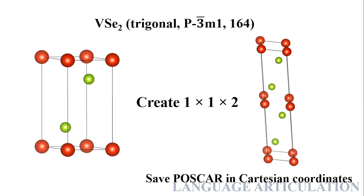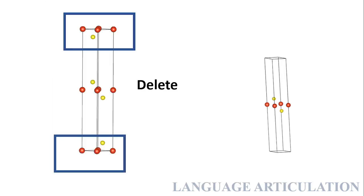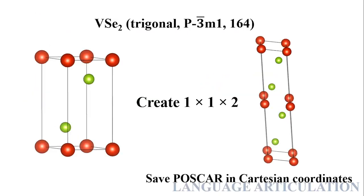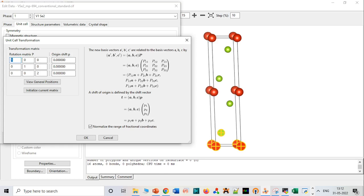It's a trigonal system — I'm not sure whether the space group is exactly correct, but the structure is a trigonal system. You have to create a 1×1×2 supercell, then save as POSCAR in Cartesian coordinates. Because if you delete a layer directly, it will automatically delete related atoms as well. So you have to create a 1×1×2 supercell, and now it is exactly similar to the previous case.